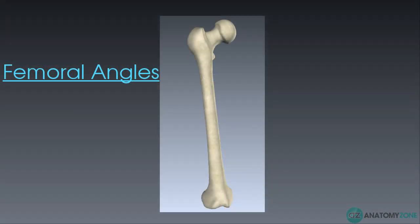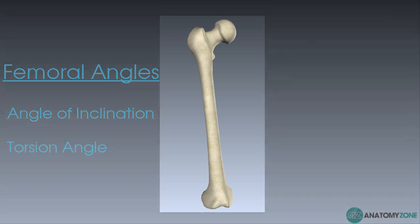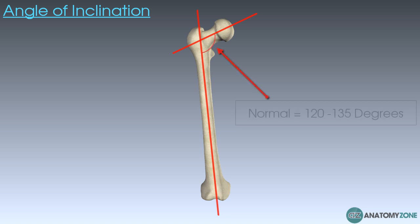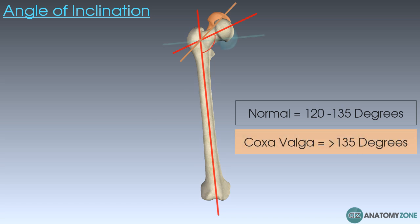The final things to touch on are two angles the femur naturally has: the angle of inclination and the torsion angle. The femoral angle of inclination is the angle formed between an imaginary line going down the shaft of the femur and a line going through the neck of the femur. In the normal adult this is between 120 and 135 degrees, with an average of around 130 degrees. If the angle increases beyond 135 degrees it's referred to as coxa valga, and if it decreases below 120 degrees it's referred to as coxa vara.